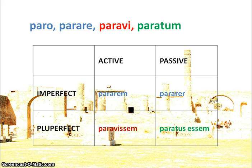In the passive, it's the fourth principal part plus -SSE plus personal endings. Note however that they are active personal endings — paratus essem.